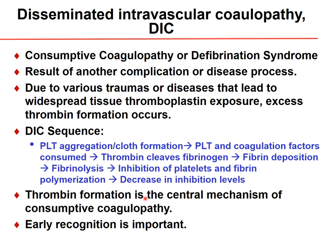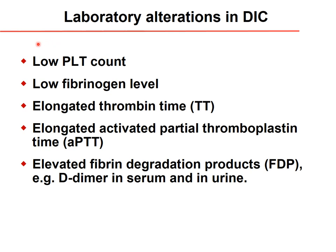To test for DIC, sequential measurements of platelet count show changes over time; fibrinogen level is typically low; thrombin time, APTT, and PT are all prolonged. Fibrin degradation products (FDP) and D-dimer can be measured in serum and urine.